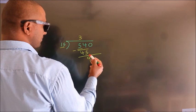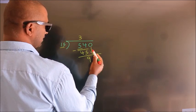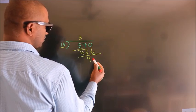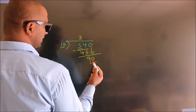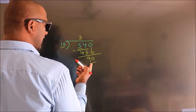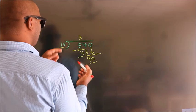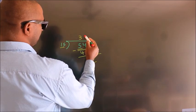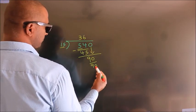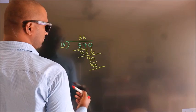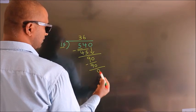After this, bring down the beside number. So 0 down, making 90. When do we get 90 in the 15 table? 15 sixes is 90. Now we subtract. We get 0.